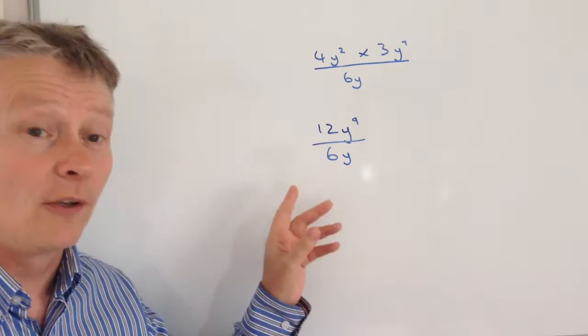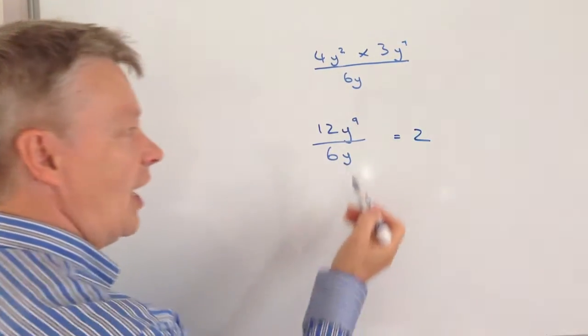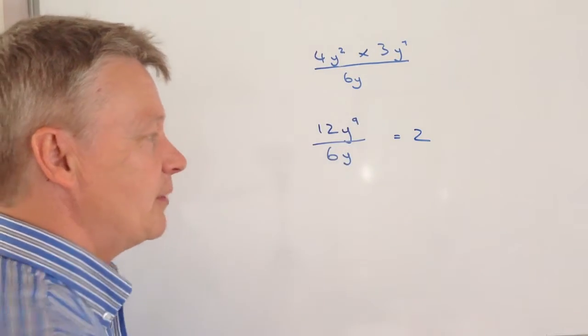Okay, so 12 divided by 6, again, perfectly straightforward, that's going to be 2. And I've got y to the 9 divided by y.